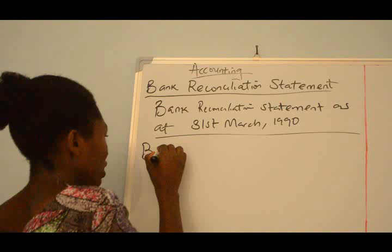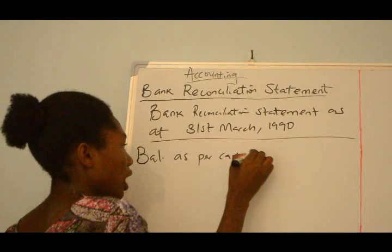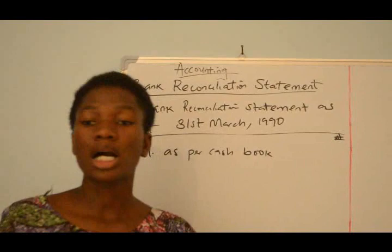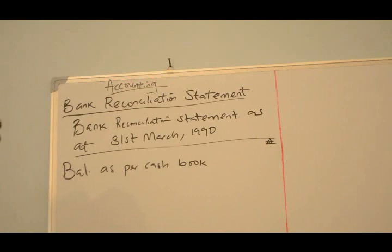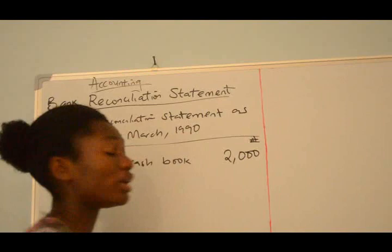The first thing we'll be doing after addressing our account is putting in the date, which is 31st March 1990. So this is where we'll be starting from. We are starting with our Balance As Per Cashbook, so the first entry, as shown in our format, is our Balance As Per Cashbook.